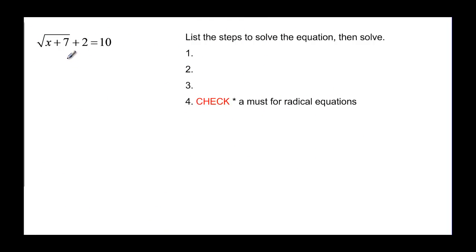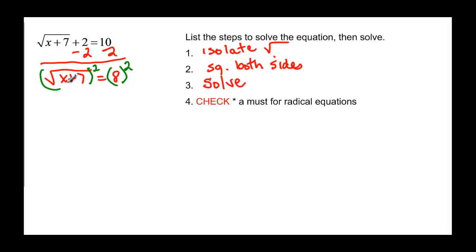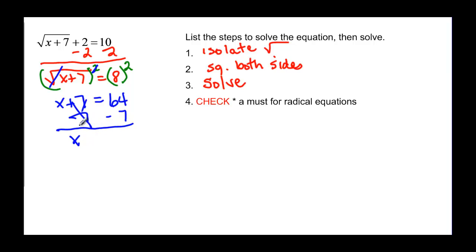Here is the list of steps to solve this equation — we have an extra step. First, we have to isolate the radical, so we subtract 2 from both sides, giving us the square root of x plus 7 equal to 8. Then we square both sides: the square cancels the square root and we have x plus 7, and 8 squared is 64. Subtract 7 from both sides and x is equal to 57.